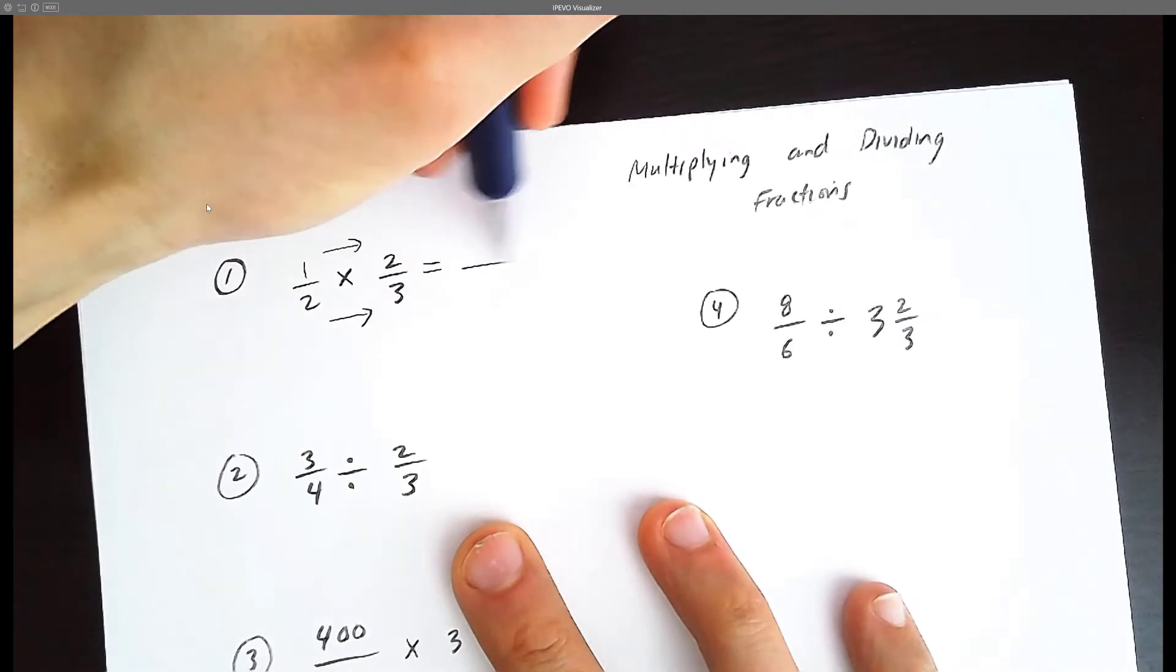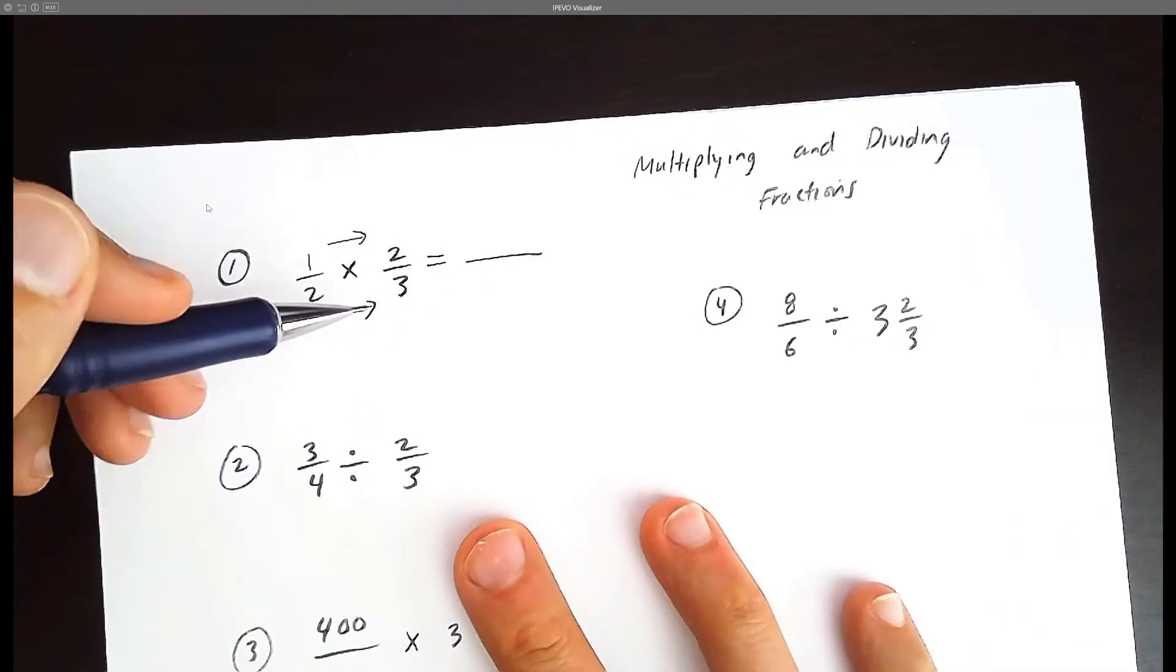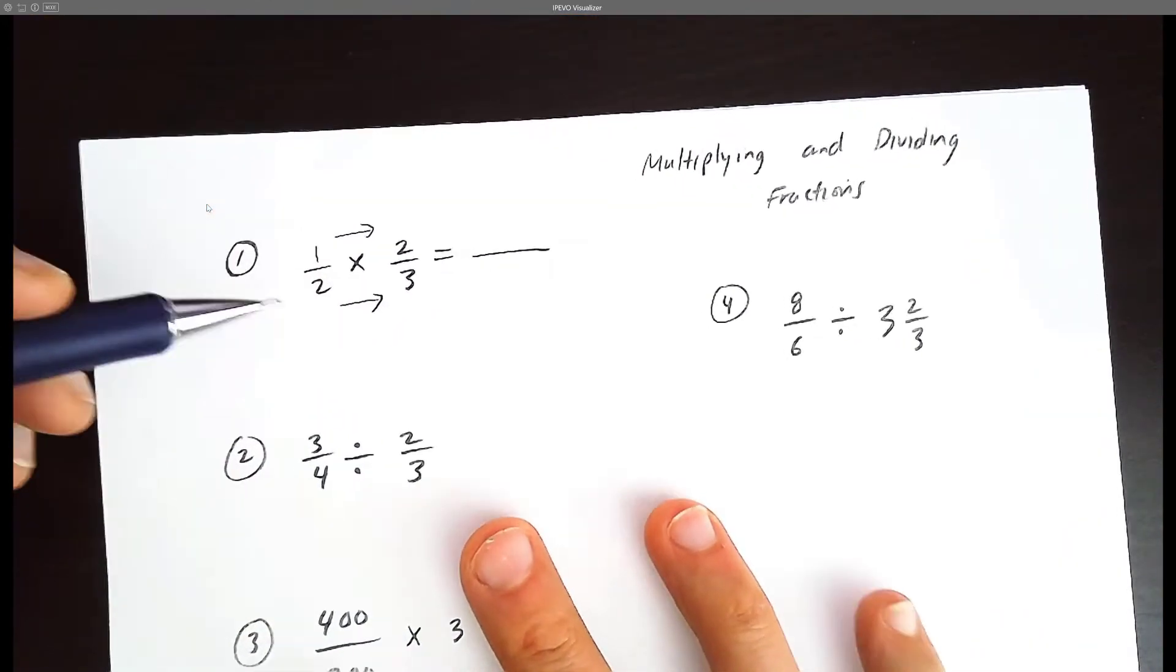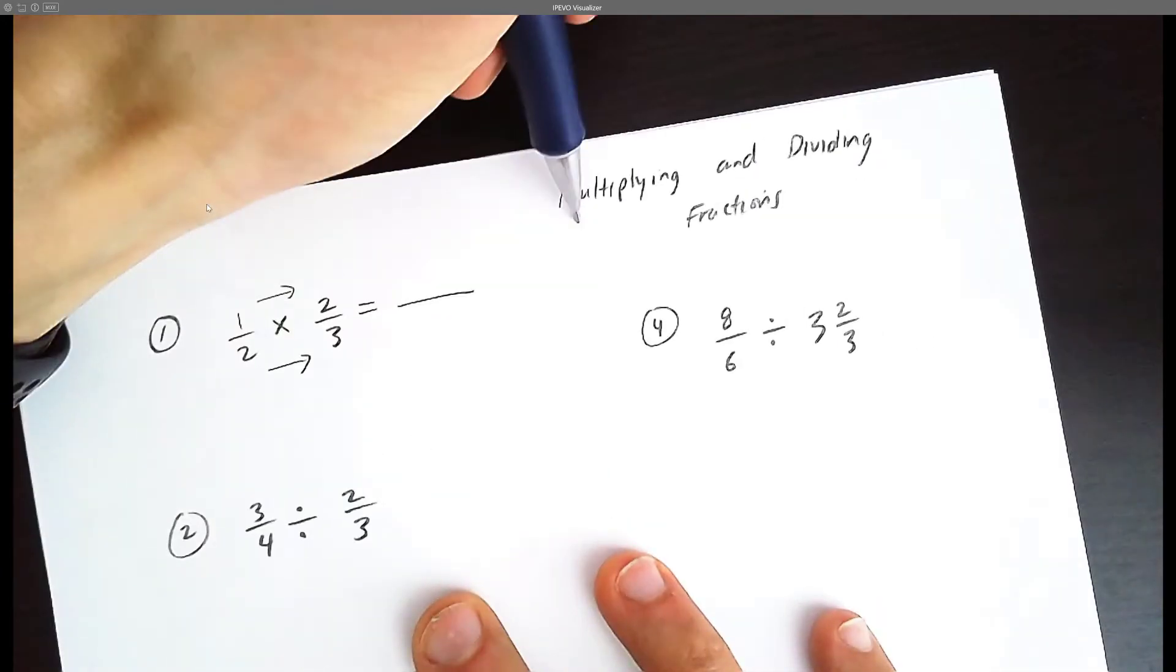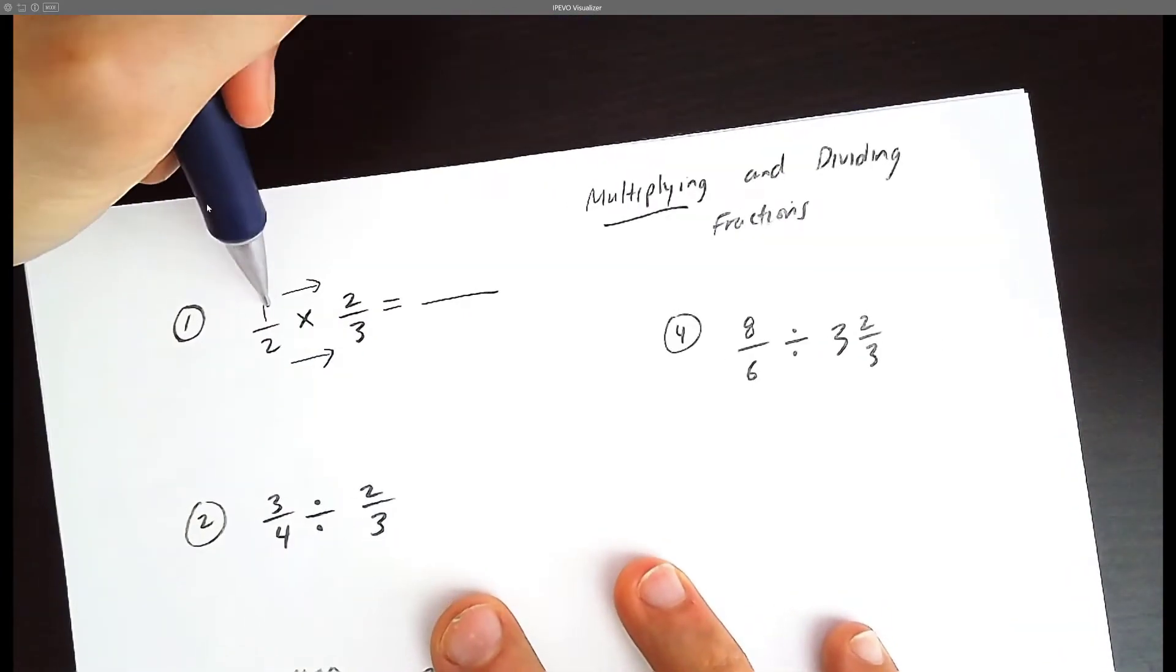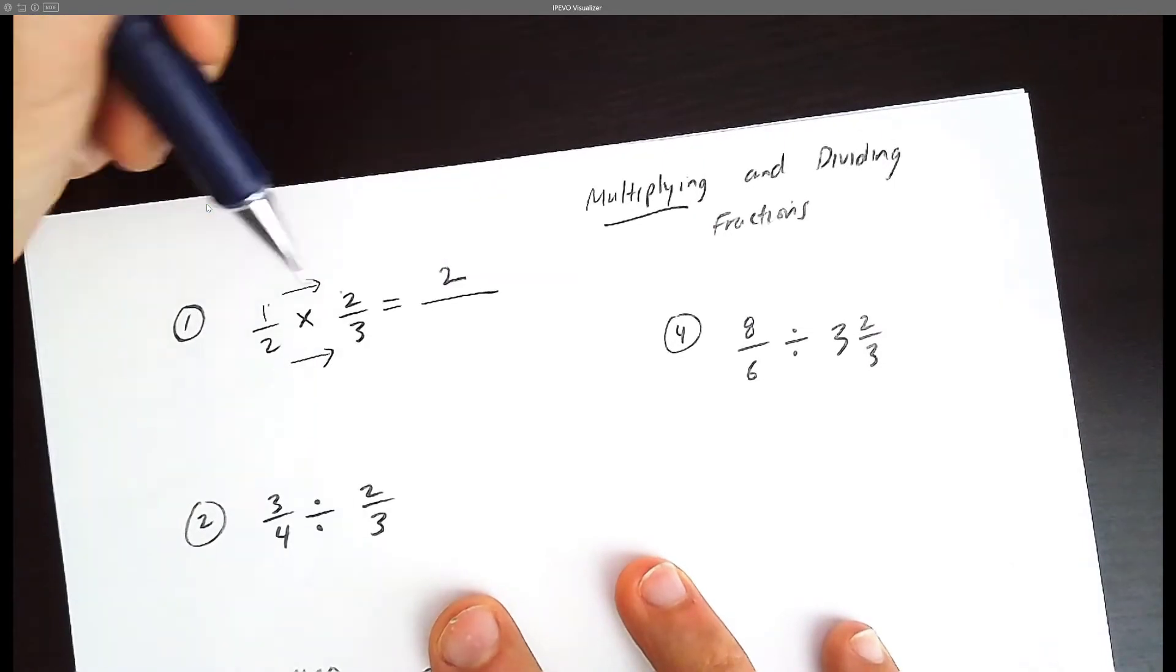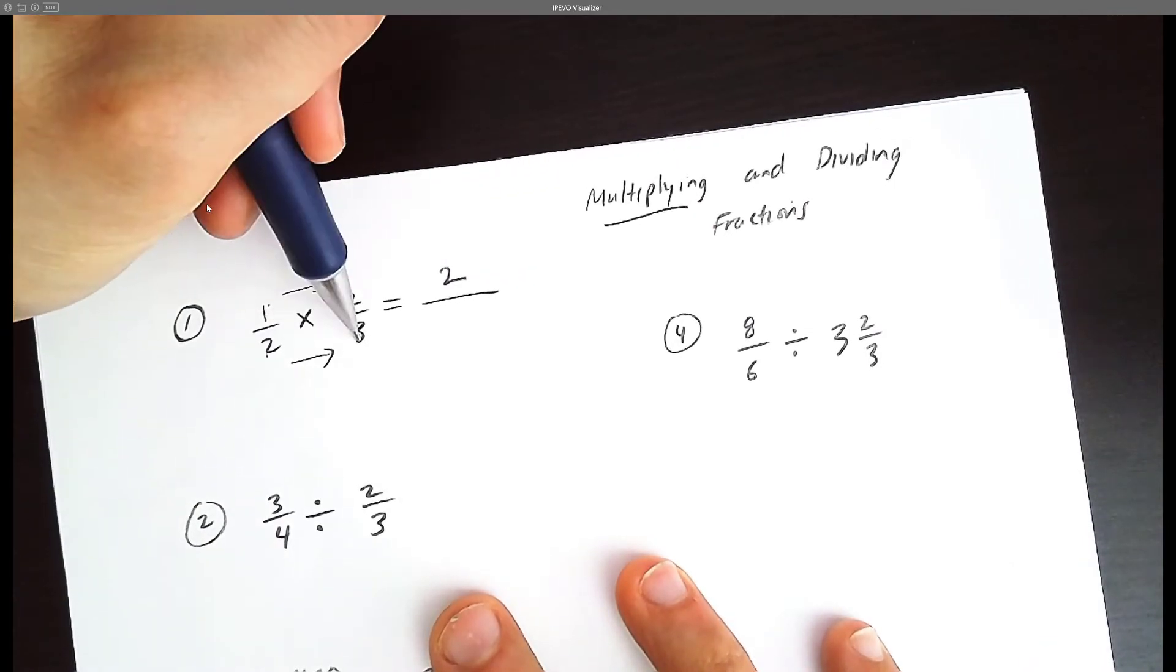This is actually easier than adding fractions. Adding fractions, you have to worry about making the bottoms the same, having a common denominator. But multiplying fractions, you simply go 1 times 2 is 2, 2 times 3 is 6.